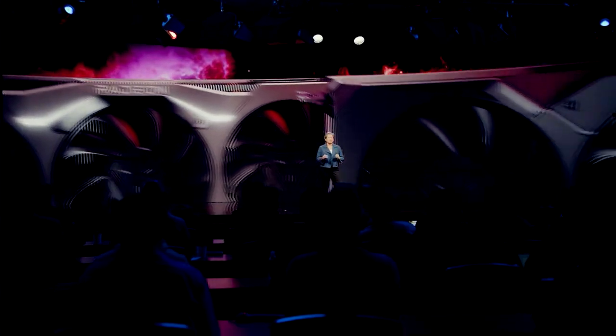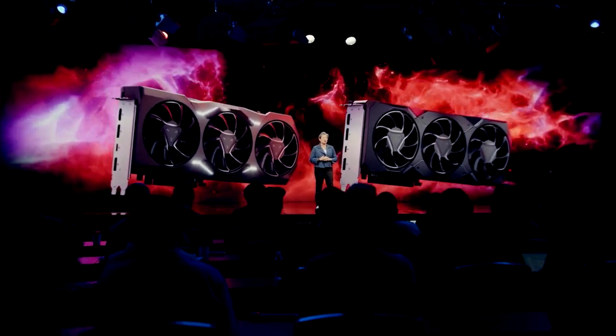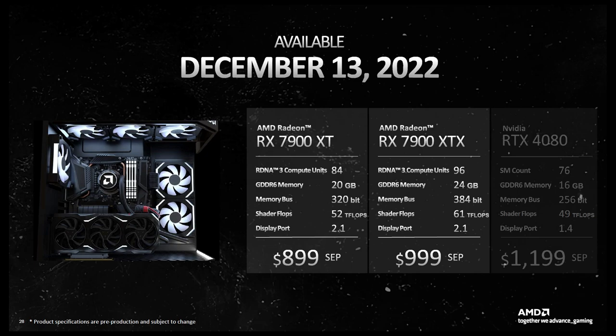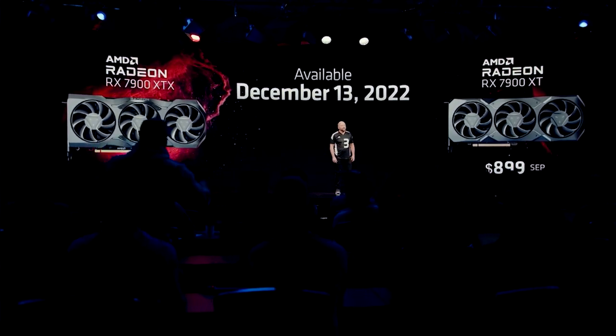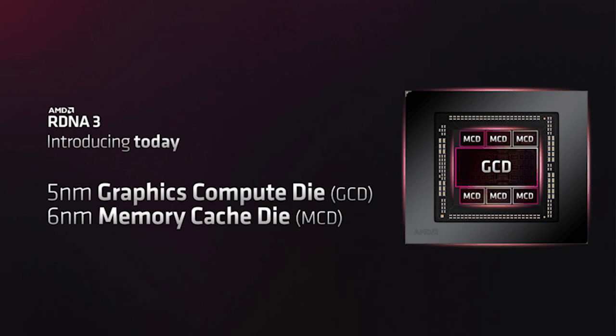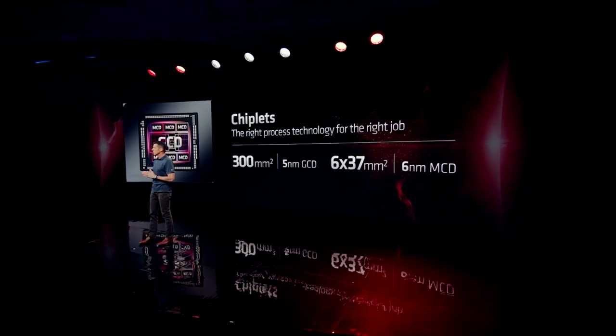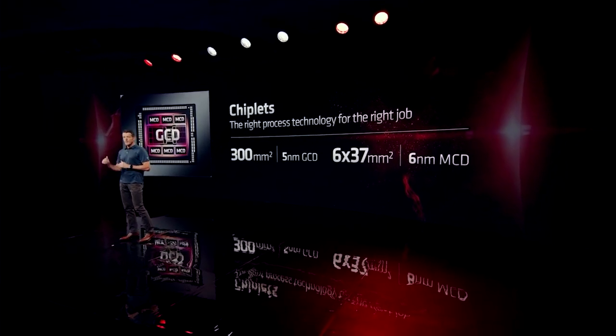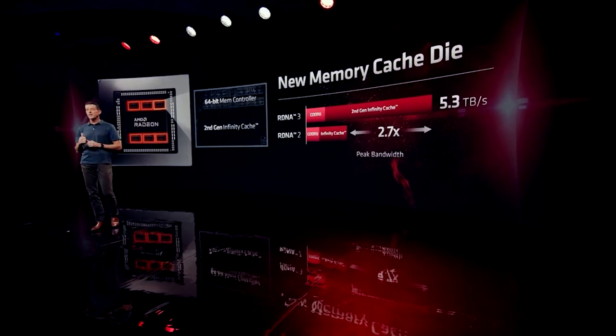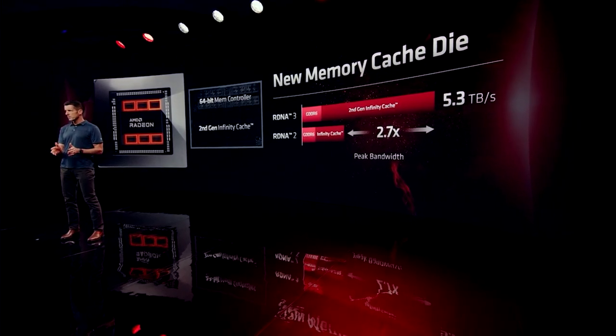Starting with the basics: the Radeon RX 7900 XT and 7900 XTX are both powered by the Navi 31 silicon, a chiplet-based design incorporating AMD's next-generation graphics IP, RDNA 3. The flagship will retail at $999, while the RX 7900 XT will cost $100 less at $899, with both launching in mid-December. Navi 31 comprises a single GCD — Graphics Compute Die — built using TSMC's 5nm process, weighing around 300 square millimeters, and up to 6 MCDs — memory cache dies — for the flagship, with the 7900 XT dropping to just 5. Each MCD weighs in at 37 square millimeters and uses TSMC's 6nm process.